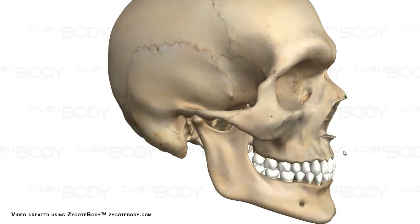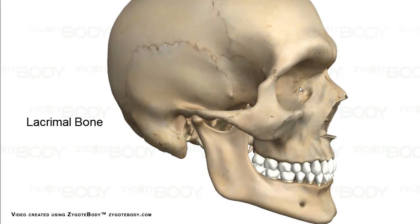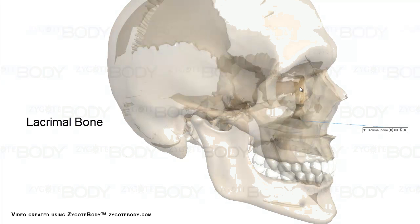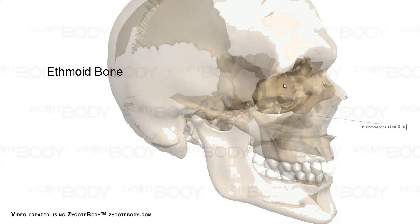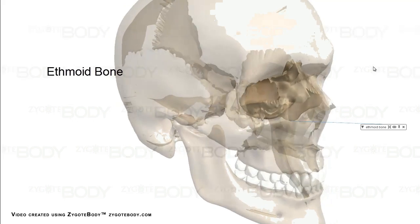Now if we take a closer look at the eye area, we can see the lacrimal bone. And just behind the lacrimal, we can see the ethmoid.